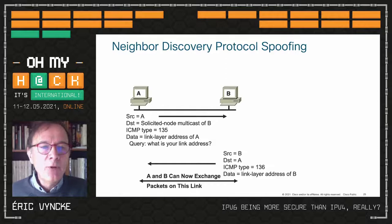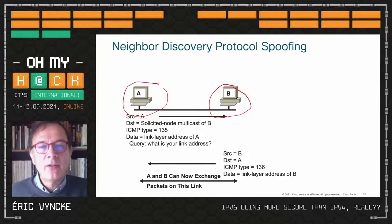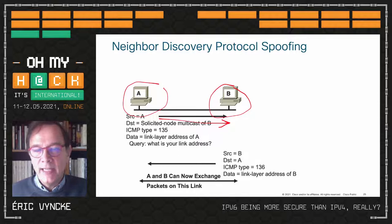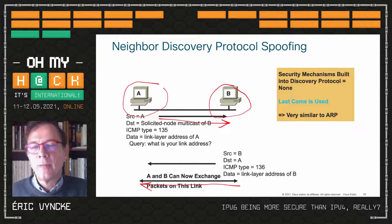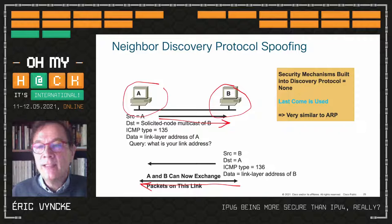Stay tuned because fragmentation is coming. There is also Neighbor Solicitation and Advertisement: when station A wants to talk to station B but doesn't know its MAC address, it sends a Neighbor Solicitation multicast — 'who is using this IPv6 address?' B replies with a Neighbor Advertisement. It's exactly like IPv4 ARP, and it also has issues. The last Neighbor Advertisement received is used by default by every host — we know about ARP spoofing.